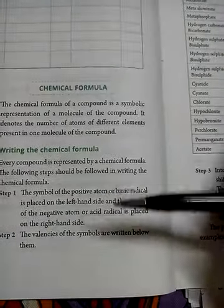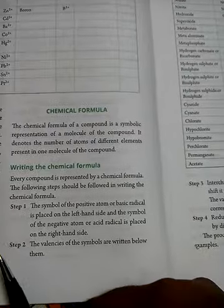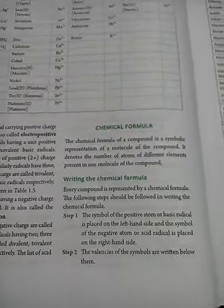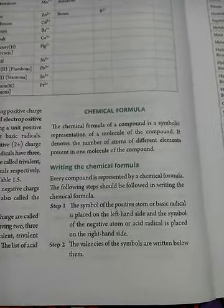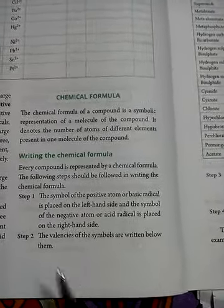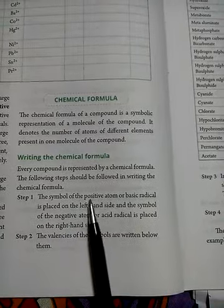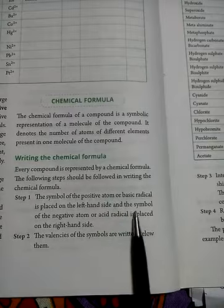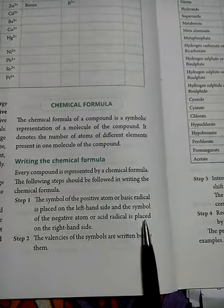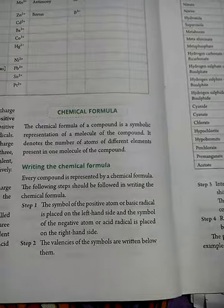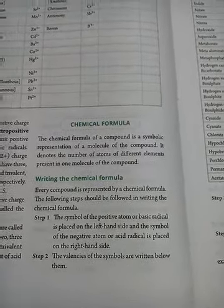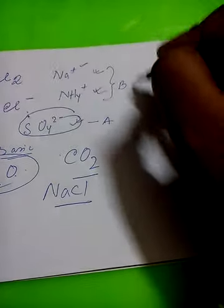Now, how to write this? There are a few rules you need to keep in mind. The first rule states that the symbols of positive atoms or basic radical is placed on the left-hand side, and the symbols of negative atoms or acid radical is placed on the right-hand side.